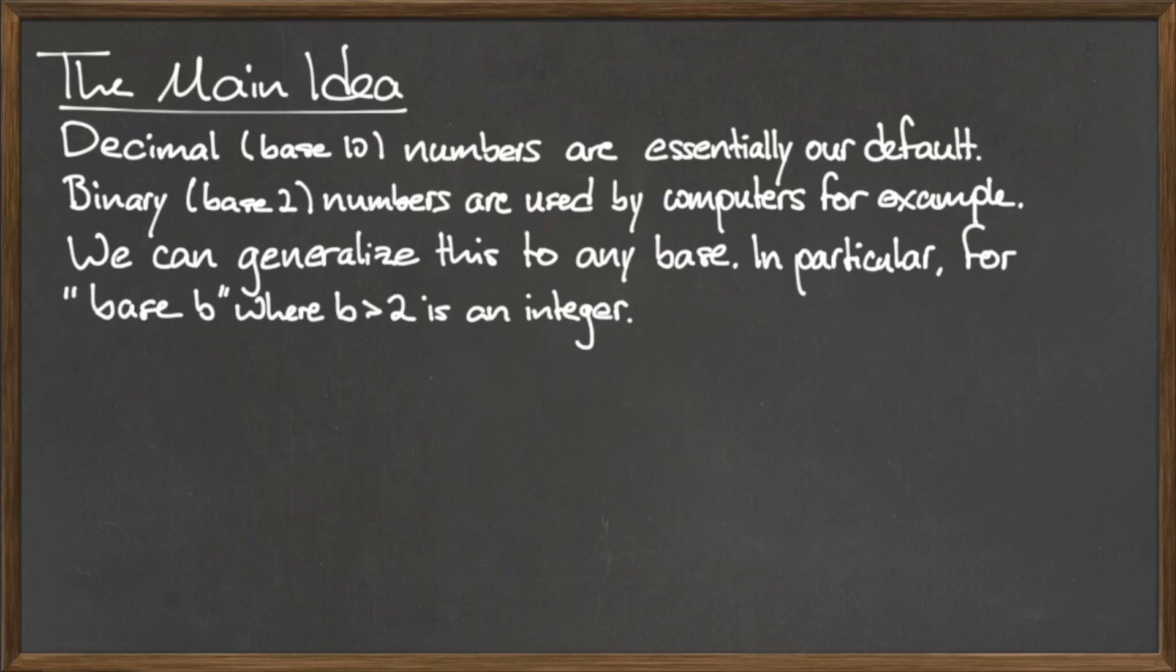In this video, we will consider generic base B numbers, where B is an integer greater than or equal to 2, but less than or equal to 36.